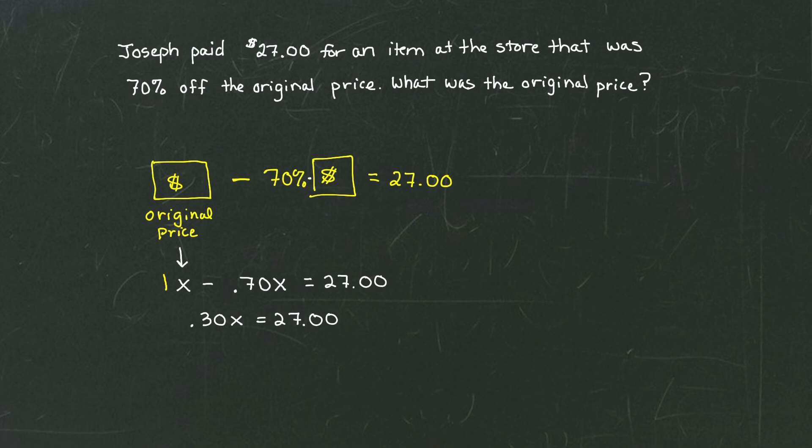To get our sale price, we simply have to do one more algebraic step, and that is we have to divide both sides of this equation. We're going to divide the left side by 0.30, and we're going to divide the right side by 0.30.